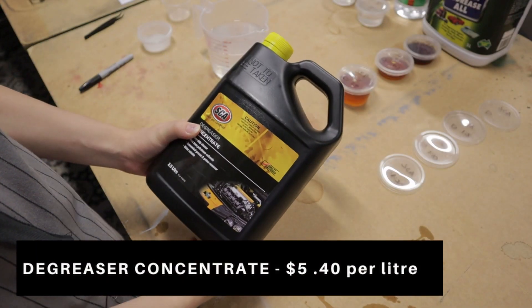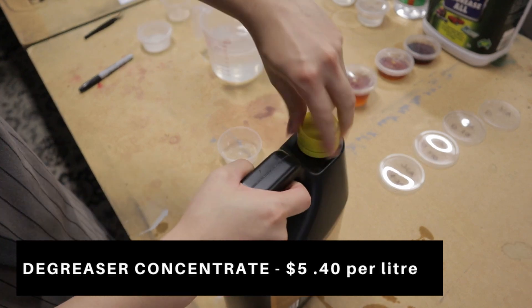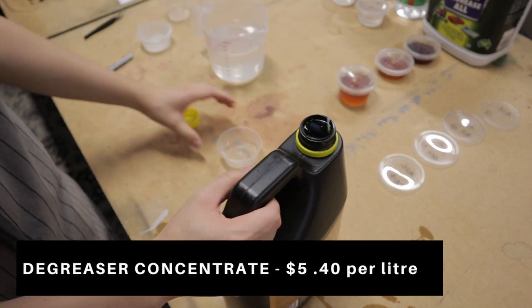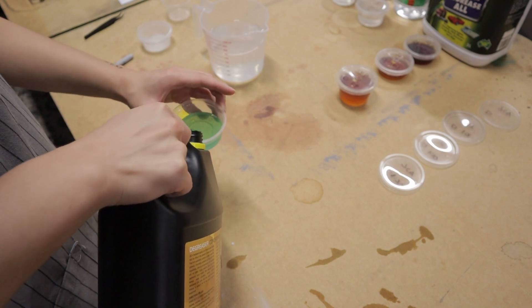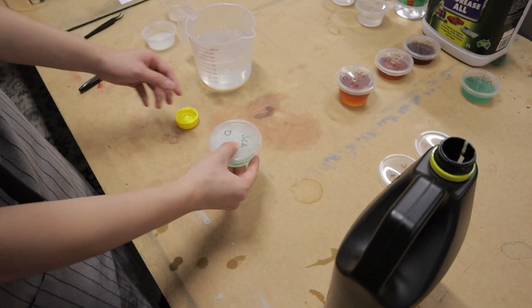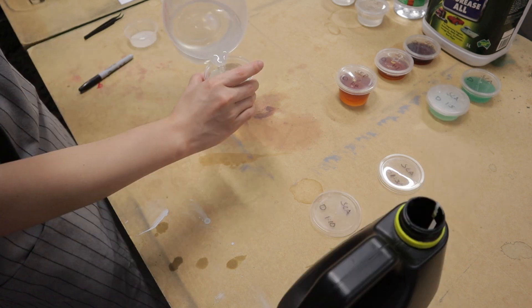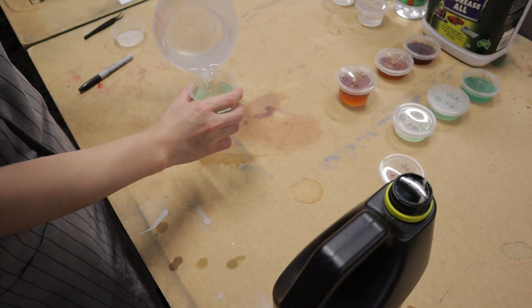I'll also be testing Supercheap Auto degreaser concentrate, which costs $5.40 per liter. And I'll be testing different dilutions. The concentrate itself, 1 part concentrate to 5 parts water, 1 part concentrate to 10 parts water, and 1 part concentrate to 30 parts water.